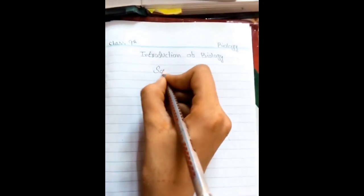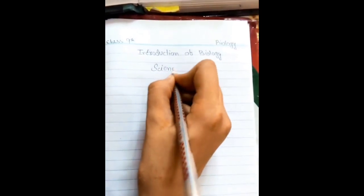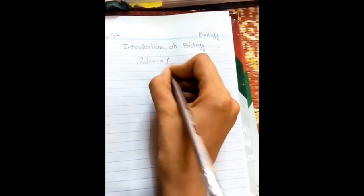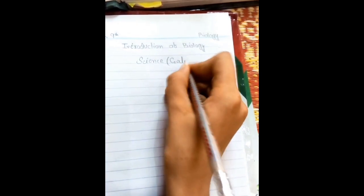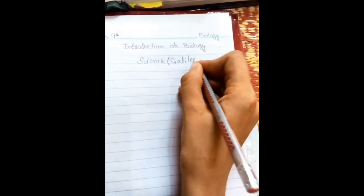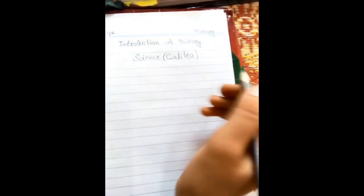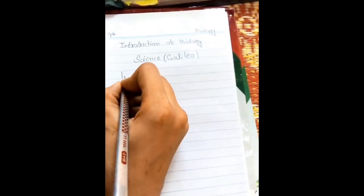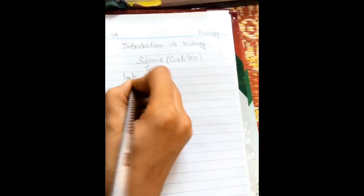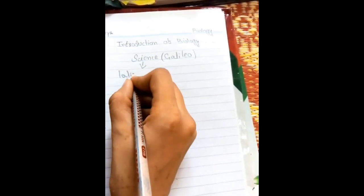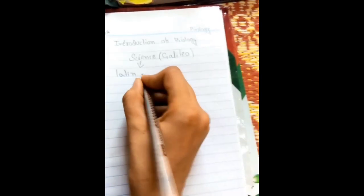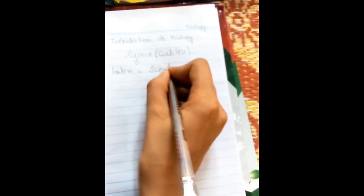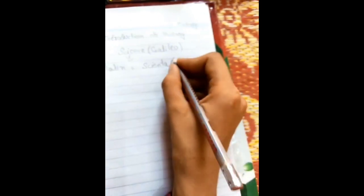Science is associated with Galileo. The word science comes from the Latin language. The Latin word is 'Scientia', which means knowledge.